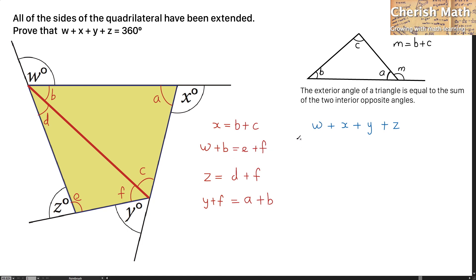That means W is the value of E plus F minus B, while X is B plus C.